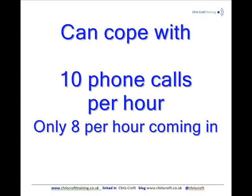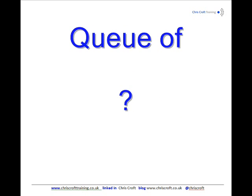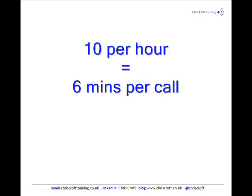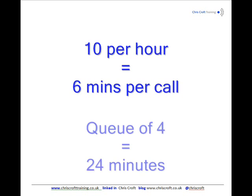You would think they'd be able to cope. It sounds like there won't be a queue, but actually there will be a queue of 4 phone calls. And 4 phone calls is quite a bit, because if you can do 10 per hour, that means it takes 6 minutes per phone call. And if you've got a queue of 4 phone calls, that means you're waiting for 24 minutes.